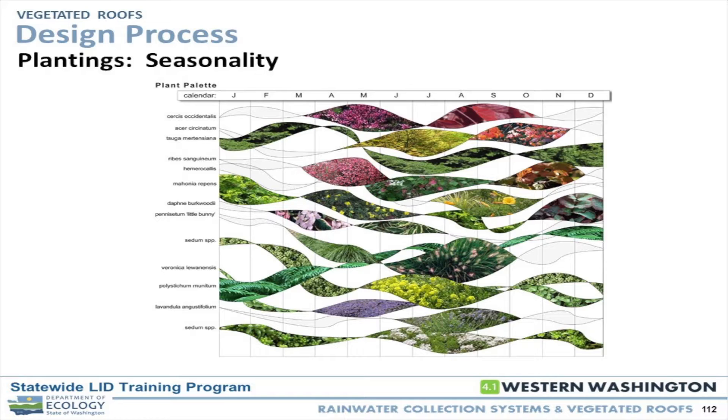The other part of it is a diversity standpoint — actually being able to integrate plants that are going to provide different bloom times, different textures, different colors, and have some of that aesthetic and seasonal variation. And as you go from extensive to intensive roofs, you have a lot more flexibility incorporating that.